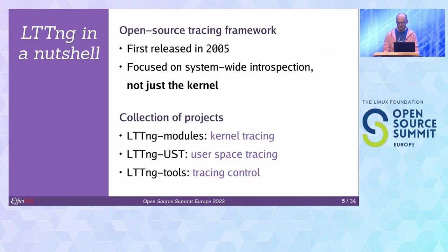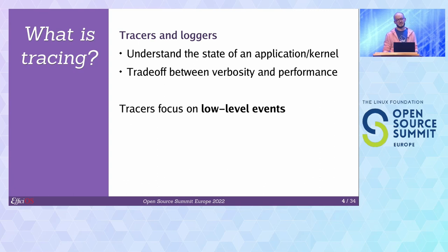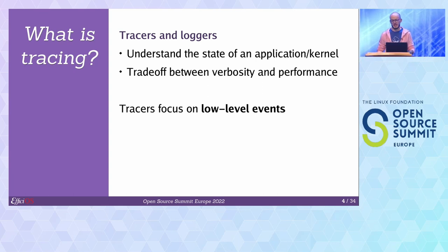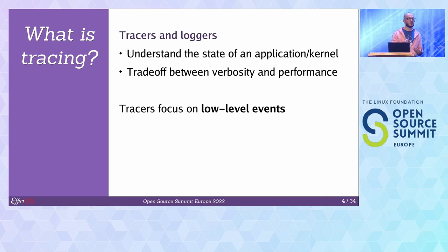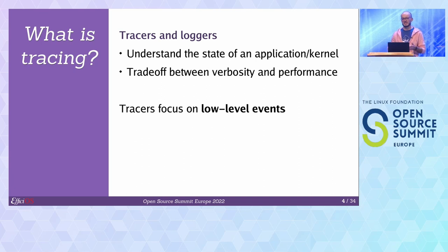The real difference is the nature of the events we target. With loggers, you target high-level events, and their low frequency makes it possible to log to text. With tracers, we're looking at very low-level events like syscalls and IRQs, and in user space, things like memory allocations and job dispatch — things that can happen thousands or millions of times per second. That's why tracers have to use a binary format and make certain usability trade-offs.